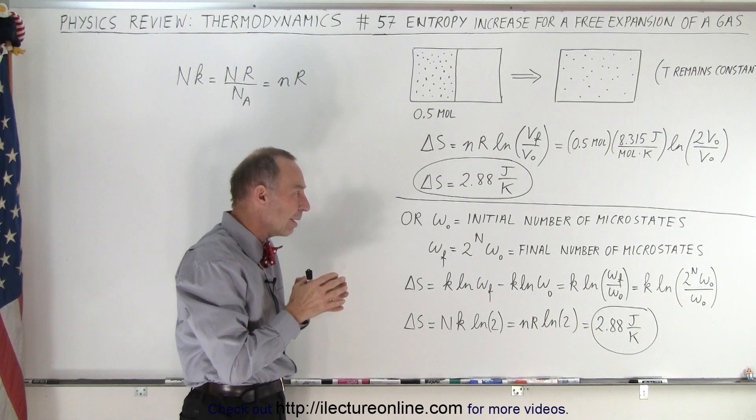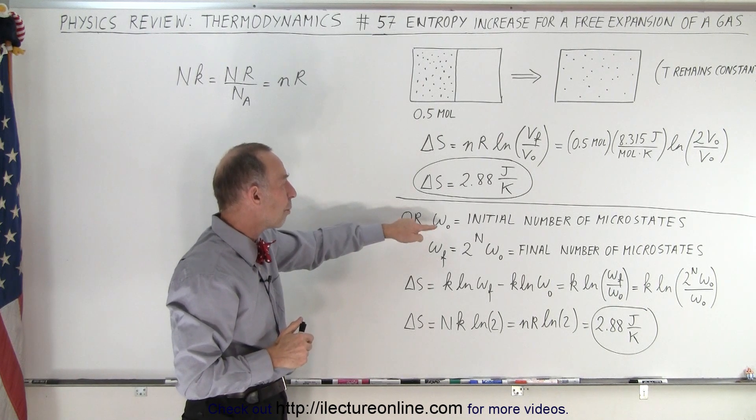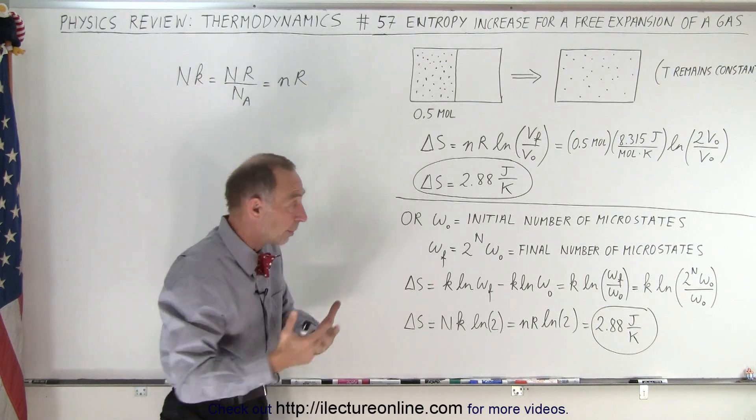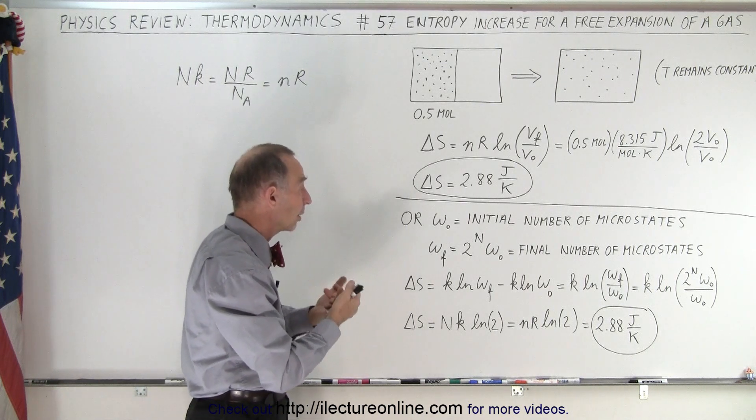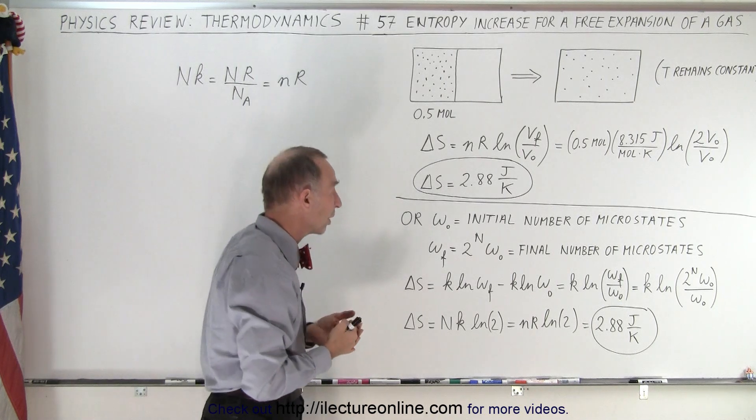But now let's talk about microstates. So let's say that we have an initial omega sub naught number of microstates which depends of course upon how many molecules we have. Well what will then be the number of microstates in the final situation?